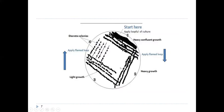This is the image of the four-quadrant streak plate method. You can see the first quadrant, second quadrant, third quadrant, and fourth quadrant. Here you can see there is heavy growth in the first quadrant and slowly the growth is decreasing, and in the end you get the isolated colonies.